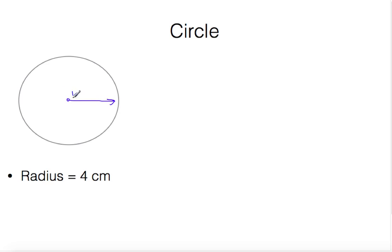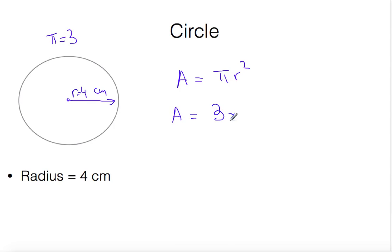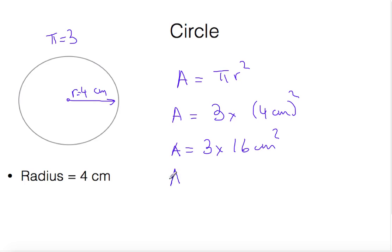The last example is a circle with a radius of four centimeters. Area equals pi times r squared. Accepting pi as approximately three, the area is three times four squared, which is three times 16 centimeters squared, giving an area of 48 centimeters squared. In the next video we will continue with measurement of volume.